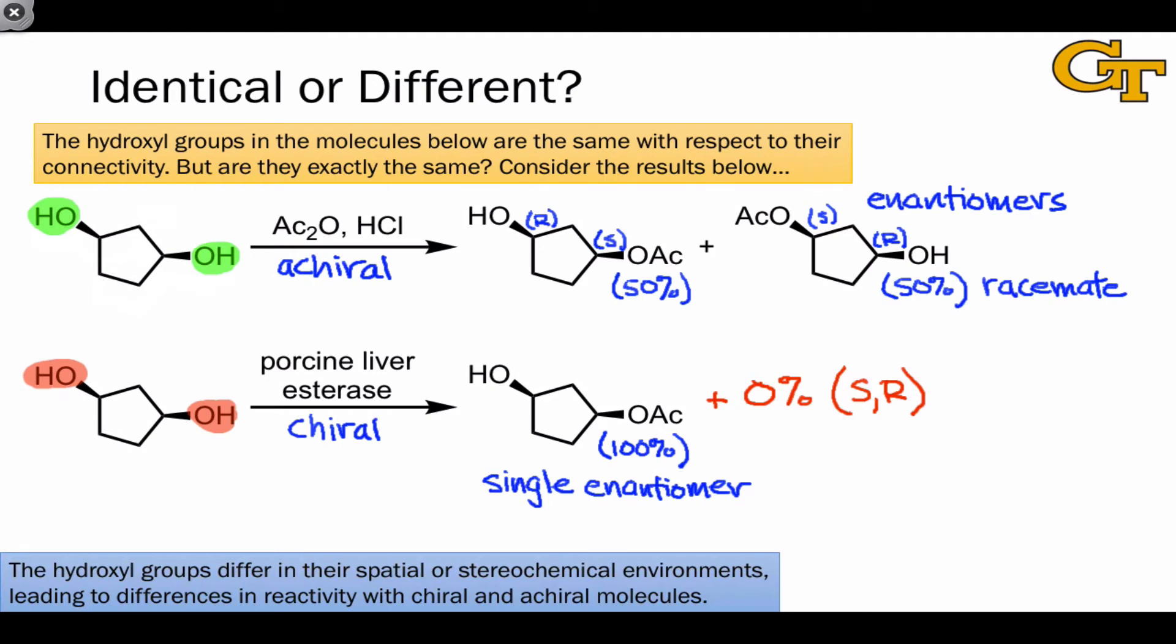And the relationship here, and the results of this achiral test reaction hint at this, is referred to as enantiotopic. The hydroxyls are in mirror image spatial environments. And this is easiest to see if we think about the plane of symmetry in this molecule that runs through the central CH2 group and exchanges the two hydroxyls. This difference in behavior of enantiotopic groups under achiral and chiral conditions is unique to the enantiotopic relationship. We'll have more to say about this at the end of this video series.